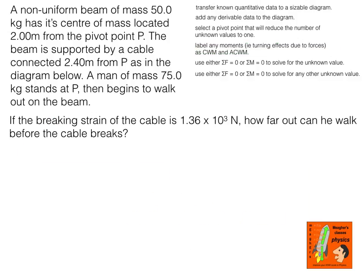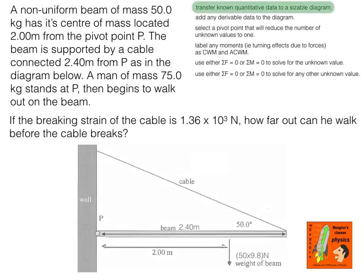Let's look at another very typical type — a beam hanging by a cable. I've transferred all the information: the length of the beam, the location of its centre of mass (it's not a uniform mass in this case), and the fact that a person is moving away from pivot point P. This one they've told us the pivot point, so we don't have to determine it. For derivable data we have the downward weight forces of the person and the beam, and some sort of force at P whose direction and magnitude we don't yet know. For the cable — imagine it wasn't there. The beam would rotate down clockwise around pivot P, so the cable must be pulling it back up, meaning there's tension along the cable going upwards.